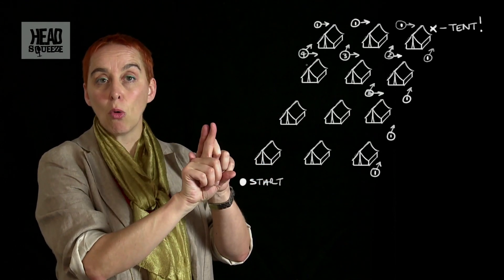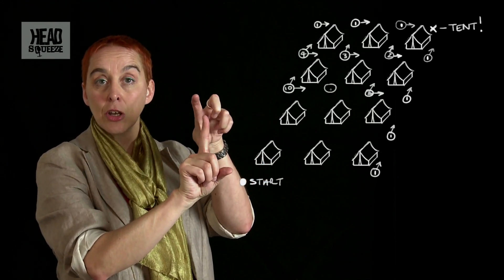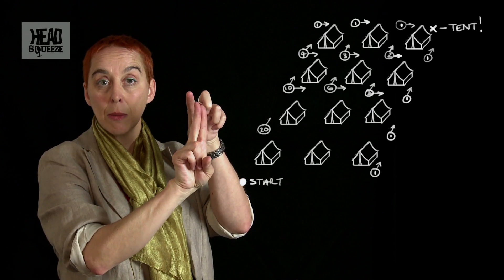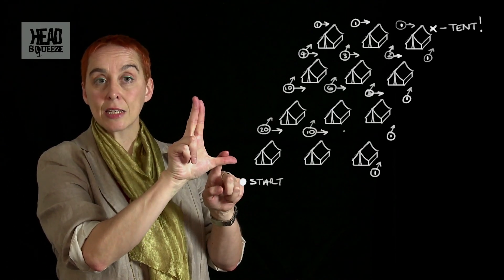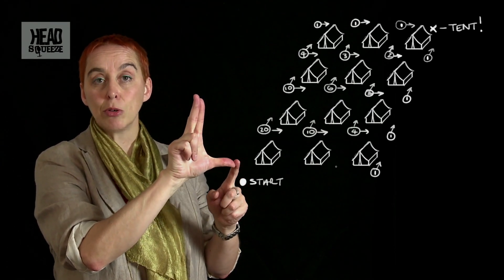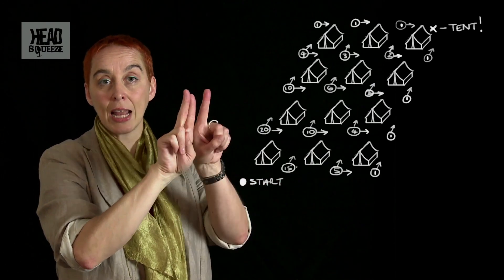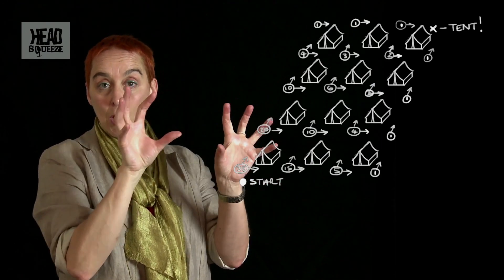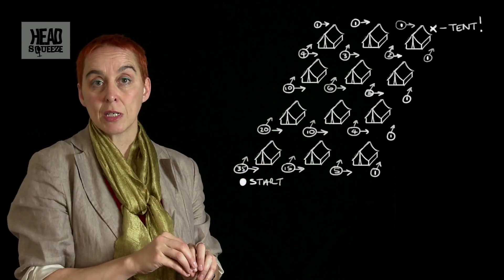So for example, if by going north, I reach an intersection with two possible routes, that gives me two. If by going east, I reach an intersection with one possible route, that gives me one. And then I can add those together and get three. And so on, all the way back to my starting position.